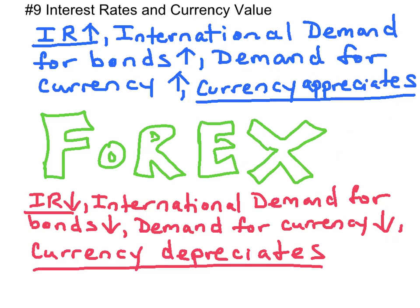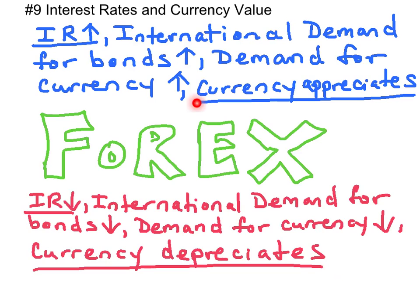The next concept has to do with interest rates and the value of a currency. If interest rates are up, foreigners will demand more interest-bearing assets such as treasury bonds. This increase in demand for treasury bonds increases the demand for the currency, and the value of the currency will appreciate in the foreign exchange market. When interest rates are low, foreigners will demand fewer interest-bearing assets, so there's less demand for the currency and it will depreciate. When currency depreciates, net exports can rise; when currency appreciates, net exports for the economy will fall.